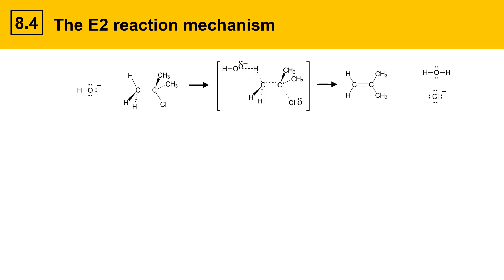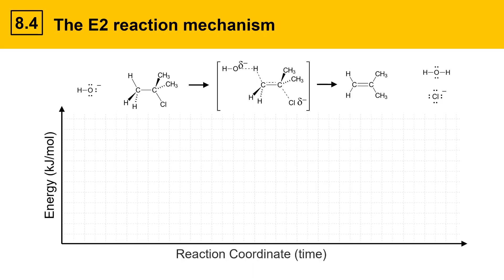We can graph the energy changes in the E2 mechanism on this slide. Here we have energy on the y-axis and reaction coordinate, which has units of time, on the x-axis. This line represents the energy changes that the reaction undergoes. On the left side, we have reactants, which is base and alkyl halide. In the middle is transition state. That's the species at the height of the highest hump. And then on the right side, the bottom of the graph represents the products.